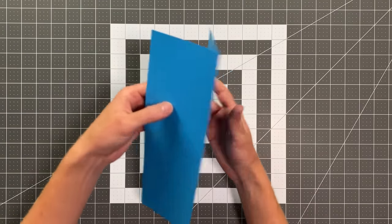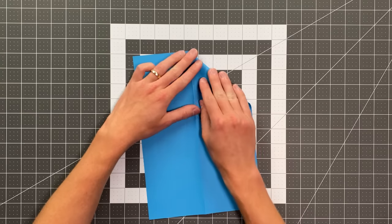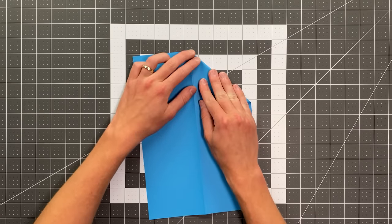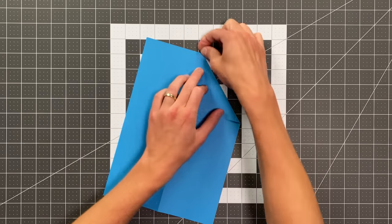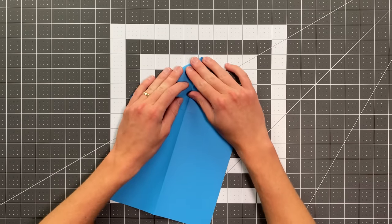Now we'll go ahead and open the paper up and fold this into the center, but you want to leave a little gap, just like this, and do the same thing on the other side, again leaving just a little gap here.